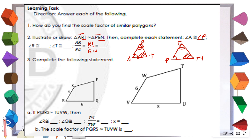For number three, you're going to complete the statement just like the triangles given on number two. You're given with polygon PQRST, which is similar to polygon TUVW. Then we're going to identify which parts are congruent. We are given here with R and V, S and W. For P, we're going to use three tick marks.